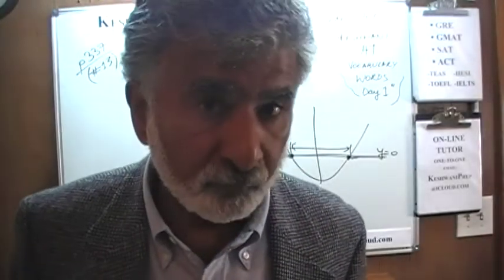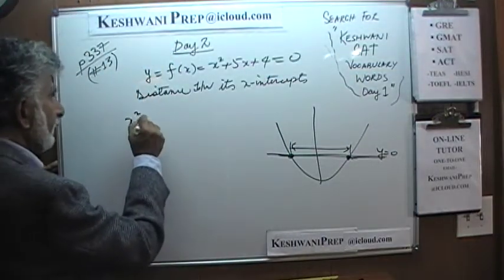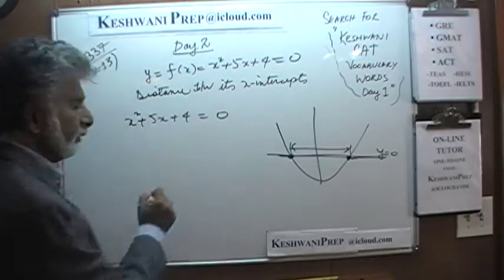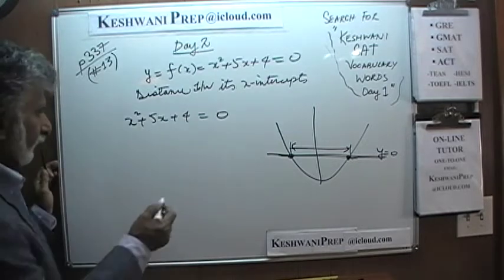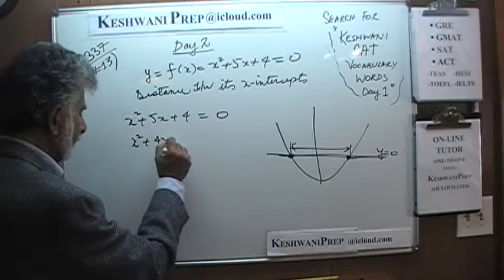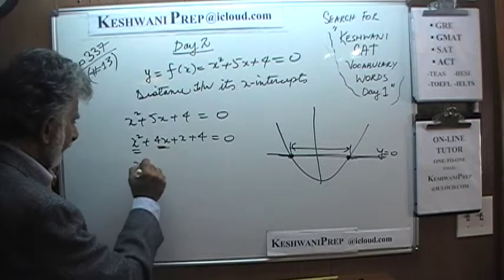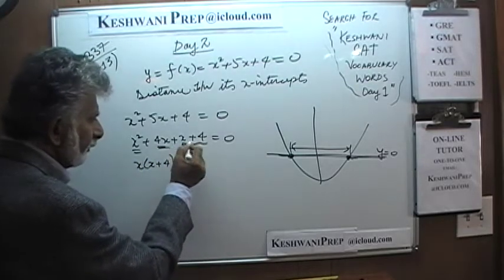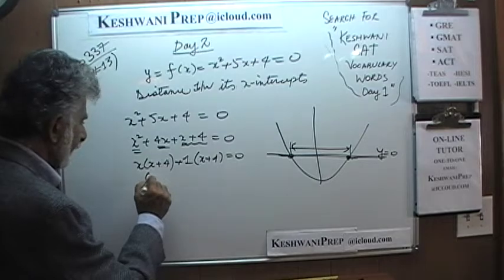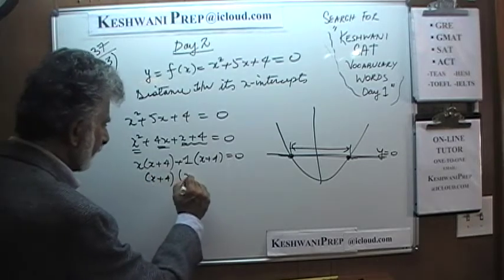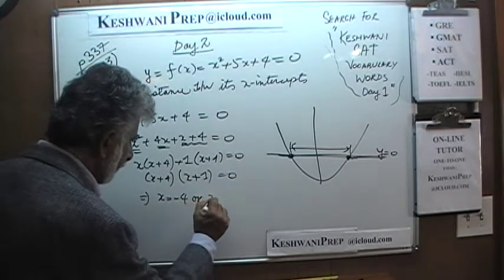You can use the quadratic formula if you prefer, or you can use factorization. I'm just going to factorize. So we have x² + 5x + 4 = 0. We're looking for two numbers that add up to 5 and whose product is 4 — and those two numbers are 4 and 1. So x² + 4x + x + 4. In the first two terms we have a common factor of x, and in the last two terms a common factor of 1, giving us (x + 4)(x + 1) = 0. Hence x = −4 or x = −1.